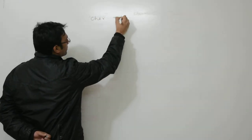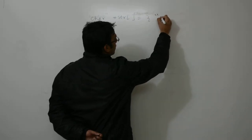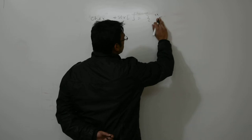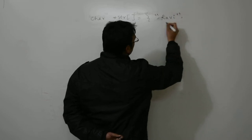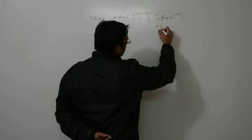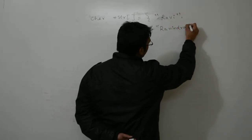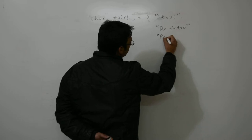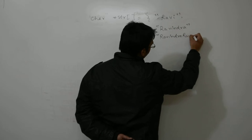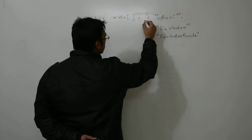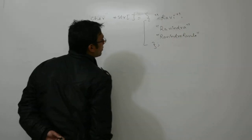Let us suppose the name is str, and what we have is R, A, V, I, N, D, R, A — spelling out 'RAVINDRA'. Because we forgot just one single comma here, the meaning of this statement actually changes for str.